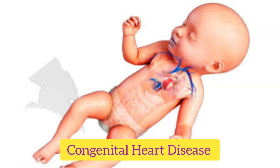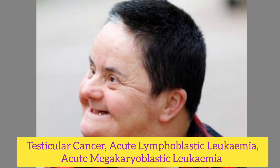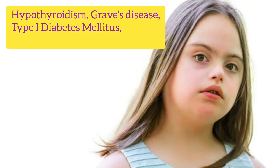Congenital heart disease is common in newborns. People with Down syndrome have the risk of testicular cancer, acute lymphoblastic leukemia, and acute megakaryoblastic leukemia. Endocrine disorders like hypothyroidism, Graves disease, and type 1 diabetes mellitus are also common in Down syndrome.